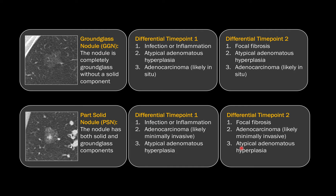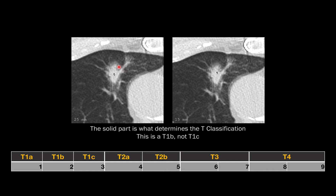When measuring these lesions, it's important to measure both the entire lesion and the solid component, because in TNM staging criteria the T component — tumor size — is based on the solid part, not the entire lesion. For example, if the solid part is 15 millimeters, that's a T1B, not the full 25 millimeters which would make it a T1C.